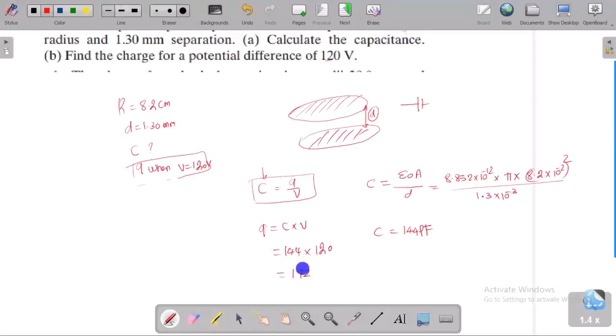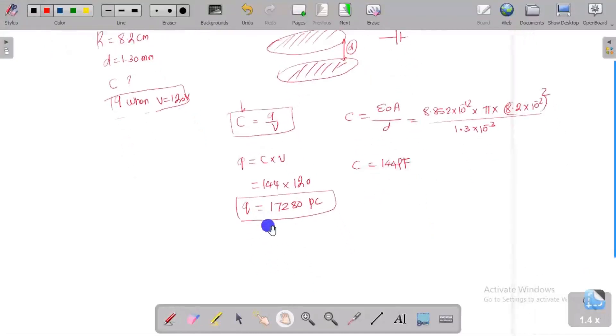The result is 17,280 picofarad. It is not in coulomb, it is in picofarad. If you put coulomb, it's 10 to the power minus 12.